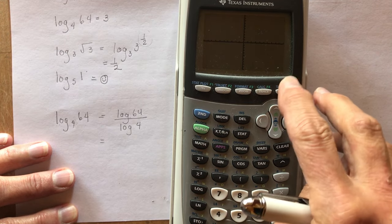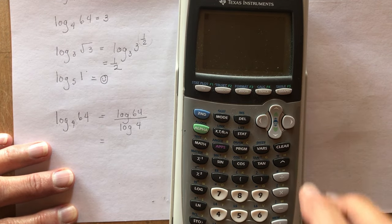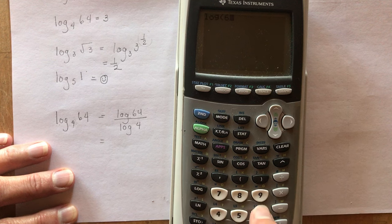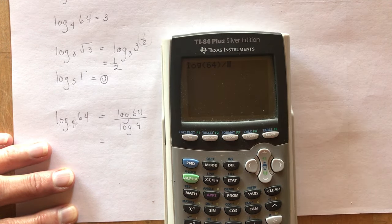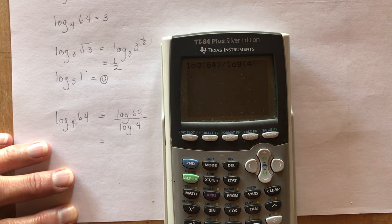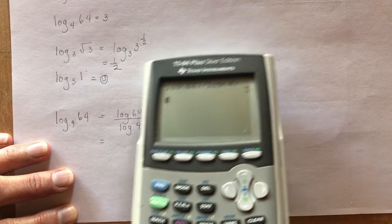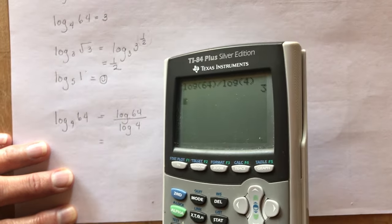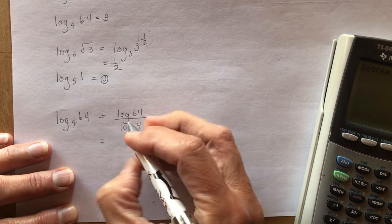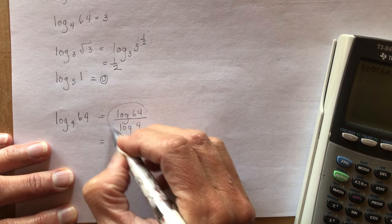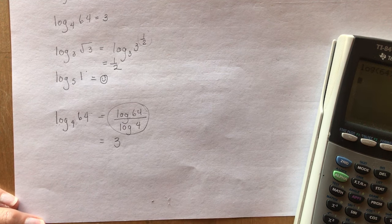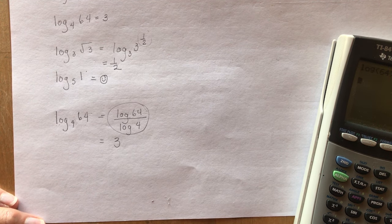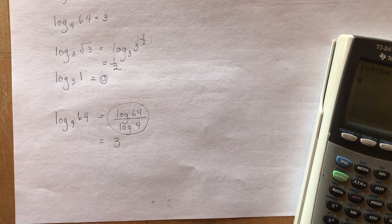So if I do log of 64, make sure you use brackets, divided by log of 4, I get 3. So that's another way of solving these ones if you don't know the answer off the top of your head. Or you can always put it in your calculator and say 4 to the power of 2, 4 to the power of 3, and there you go.